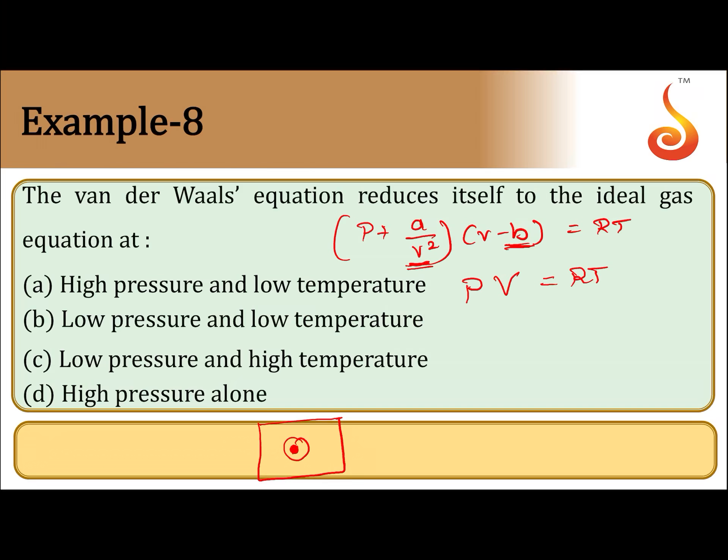At very high temperature and low pressure, the volume occupied by the gas will be very high. Compared to that very high total volume of the gas, the volume occupied by one gas molecule is negligible, so there will be no volume correction and B can be ignored. At very high volume, intermolecular forces of attraction between gas molecules are also negligible, so A by V square is negligible.